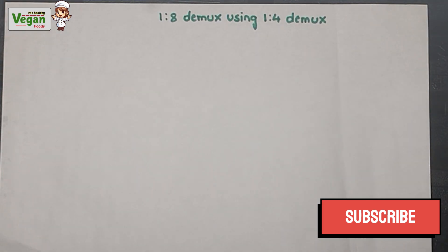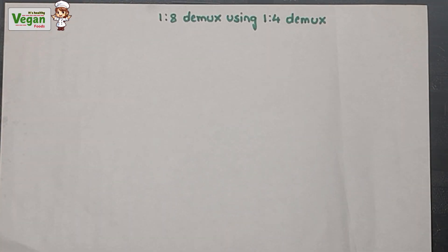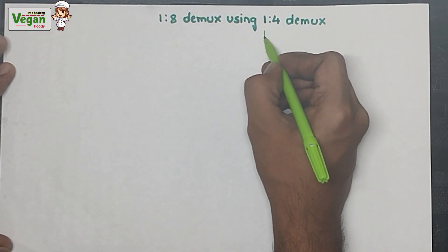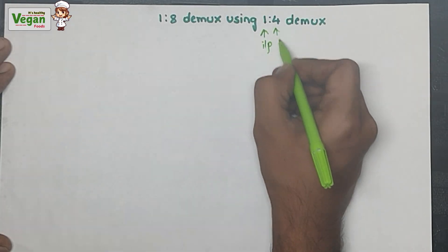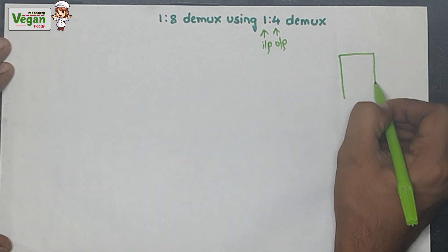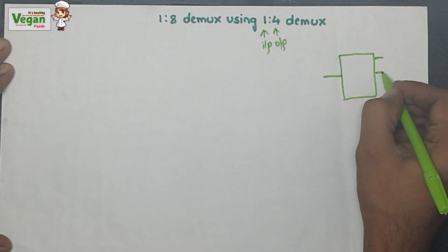Hello everyone. In this video, let's discuss the construction of a 1-to-8 demultiplexer using a 1-to-4 demultiplexer. If you are new to our channel, please subscribe for more engineering related topics. If we consider the 1-to-4 demux, there will be one input and four outputs, which we can represent using a block diagram.